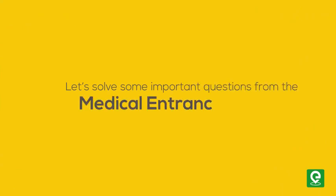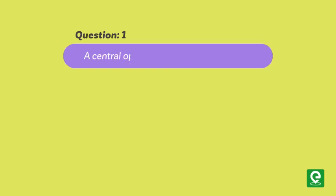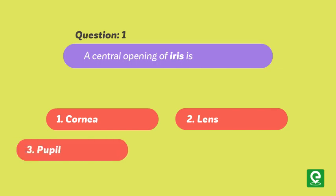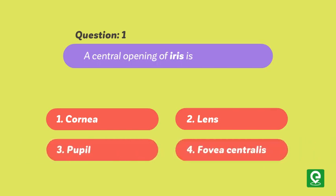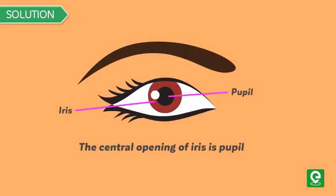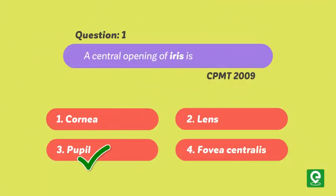Question one: What is the central opening of the iris? (1) Cornea, (2) Lens, (3) Pupil, or (4) Fovea centralis? This question was asked in CPMT 2009. Solution: The central opening of the iris is the pupil, which is regulated by the muscle fibers of the iris. Hence, option three is the correct answer.